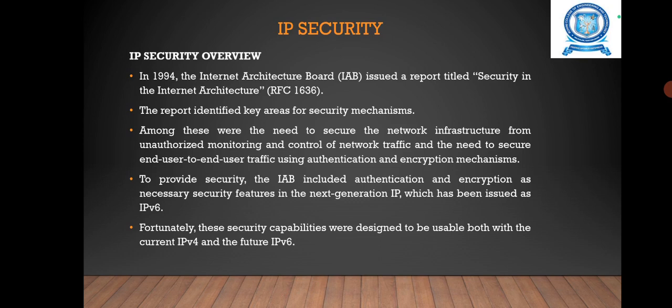Next, we are going to see the IP security overview. In 1994, the Internet Architecture Board issued a report titled 'Security in the Internet Architecture.' The report identified key areas for security mechanisms, including the need to secure network infrastructure from unauthorized monitoring and control of network traffic, and the need to secure end-user to end-user traffic using authentication and encryption mechanisms. To provide security, the IAB included authentication and encryption as necessary security features in the next generation IP, which has been issued as IPv6. These security capabilities were designed to be usable both with the current IPv4 and the future IPv6, meaning vendors can begin offering these features now, and many vendors do have some IP security capability in their products. The IP security specification now exists as a set of Internet standards.